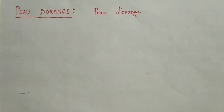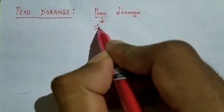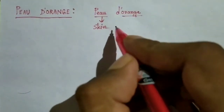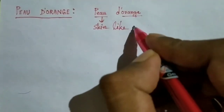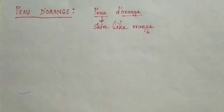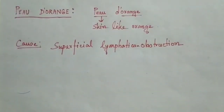What is the meaning of peau d'orange? It is a French word — 'peau' means skin and 'orange' means orange, so it means skin like orange. Peau d'orange refers to an abnormality of the breast, and it happens due to obstruction of the superficial lymphatics.